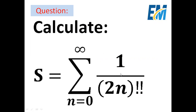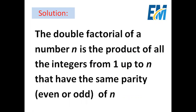Before we start with s, let us understand the concept of the double factorial. The double factorial of a number n is the product of all the integers from 1 up to n that have the same parity as n.